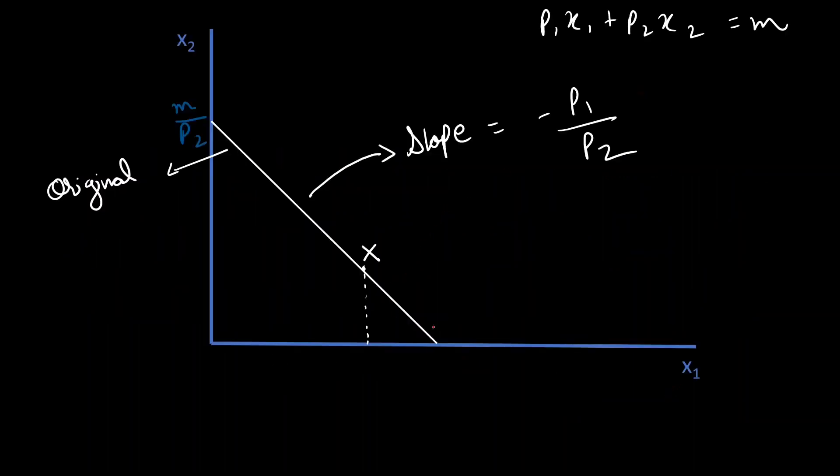Okay, this is our original budget line. X is our original demand bundle. The equation is given by P1 X1 plus P2 X2 is equal to M. You have obviously done this in the past. The slope is given by minus P1 by P2. The Y-intercept is M by P2. And similarly, the X-intercept is M by P1.